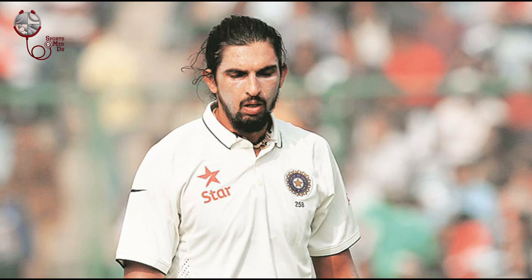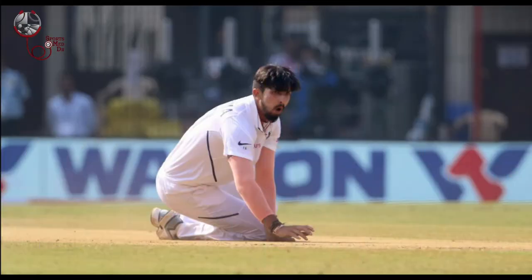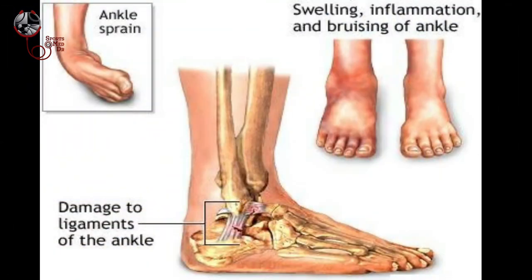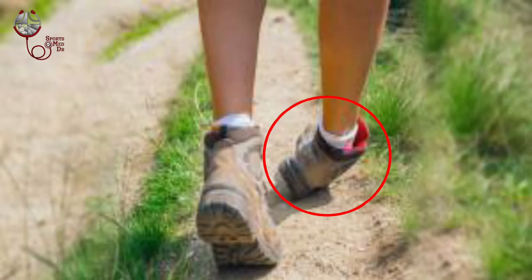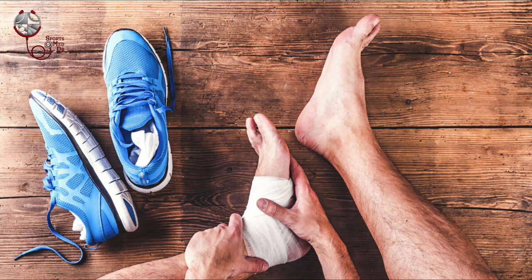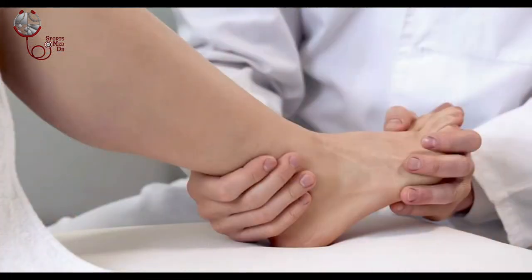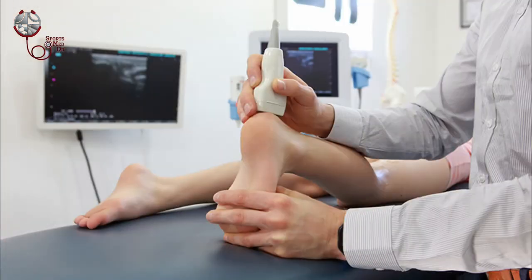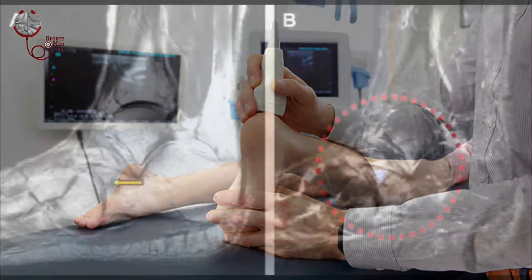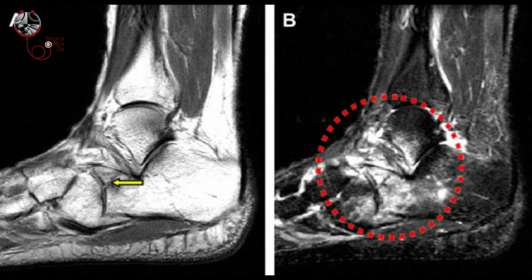Number three: ankle sprains. Did you know that Ishant Sharma, during the Ranji Trophy, got a grade three ankle ligament tear — meaning he completely tore his ligament while appealing for an LBW? Talk about tough luck. Why does this injury occur? Most commonly it is due to trauma, and 20% of the time it is due to overuse.